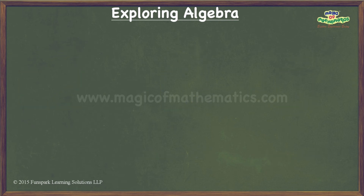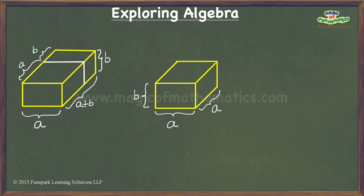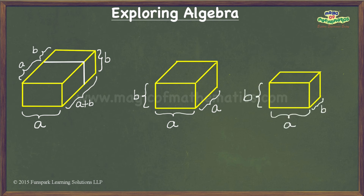When we cut the third cuboid, we again get two cuboids: the first having dimensions b units by a units by a units, with volume a squared b, and the second with volume ab squared.